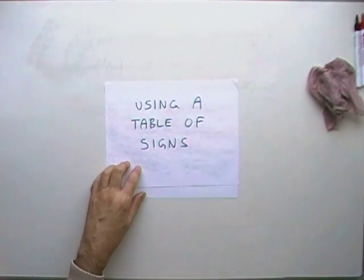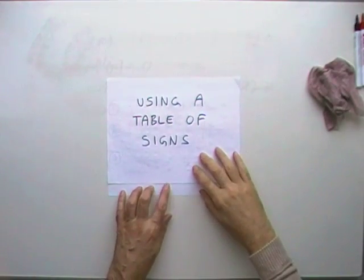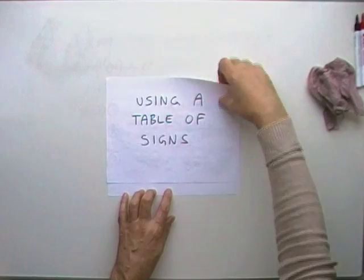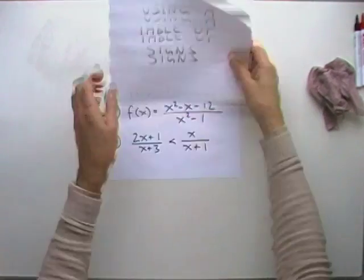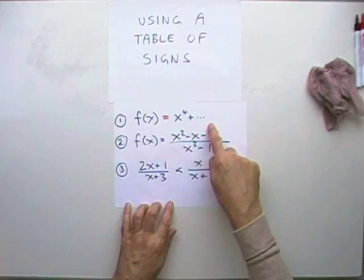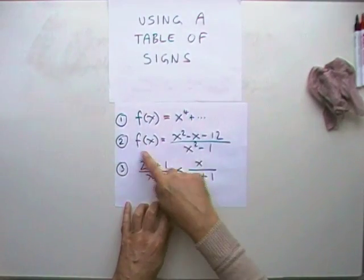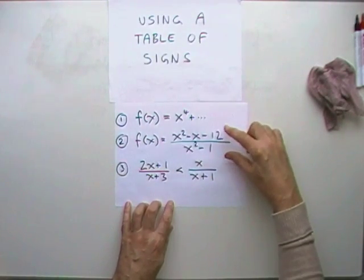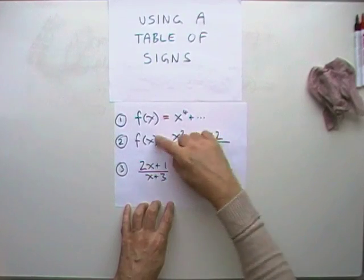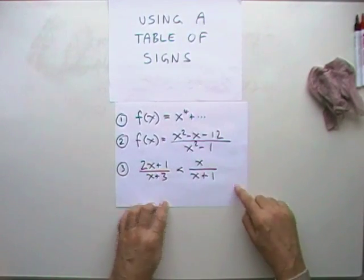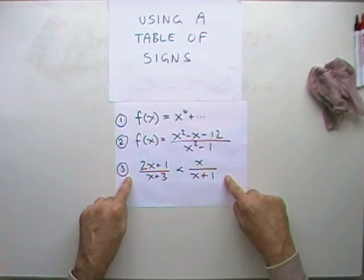Right, using a table of signs. A technique that seems to be missing from schools these days. Using it in three cases. First of all, to find the nature of the stationary points on a power four curve. Secondly, to sketch or get a picture at least of the graph of a rational function. And lastly, to solve an equation.